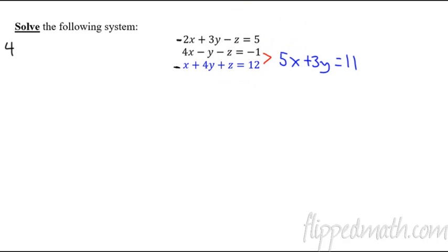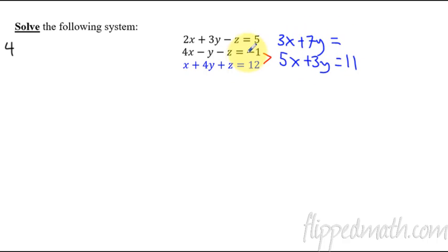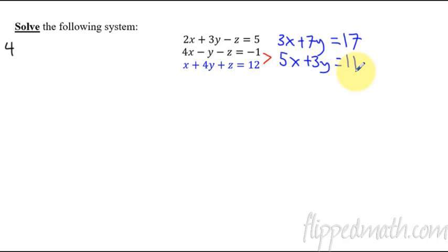Adding the first and third equations: 2x plus x gives 3x, the 3y plus 4y gives plus 7y, the z's cancel because we have a minus z and a positive z, and that equals 17. Now we can solve this just like we did in our last lesson solving a system of equations. I'm going to speed this part of the video up — you could slow it down if you need to. I'm going to multiply the first new equation by negative 5 and the second by negative 3 to get the x's to cancel.